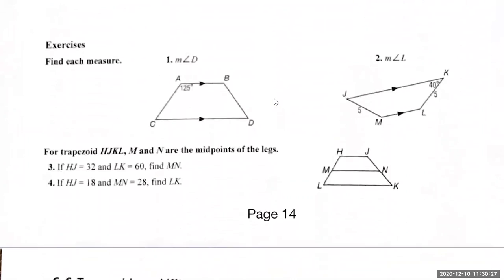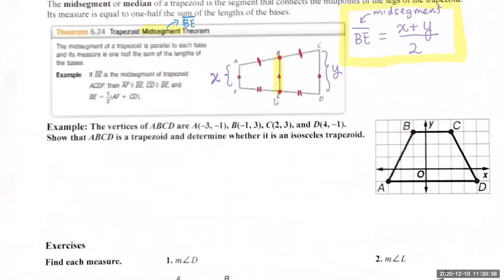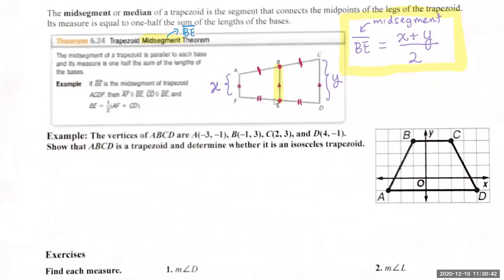This is page 14. If you don't have the packet in front of you, just write out that formula in a box. Looking at the picture below — the bases of the trapezoid are AD and BC, the ones that are parallel to each other. We're going to find the length of BC. The length of BC plus the length of AD divided by two should equal the length of the mid-segment.